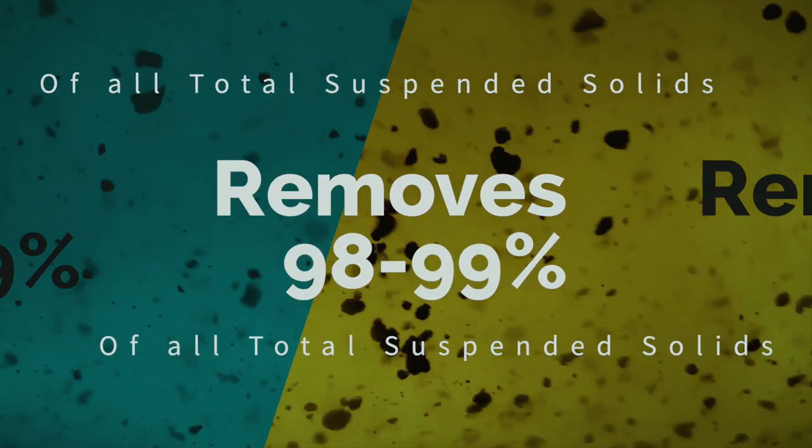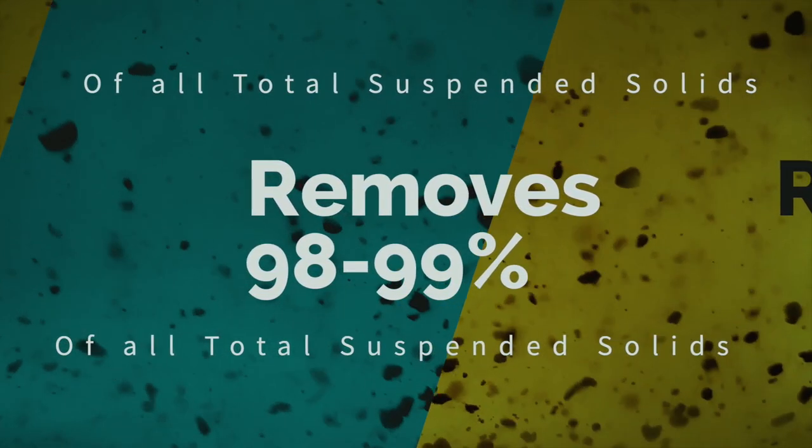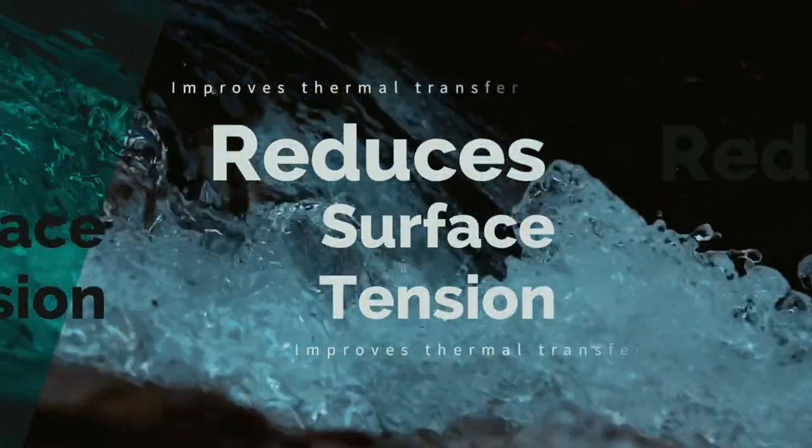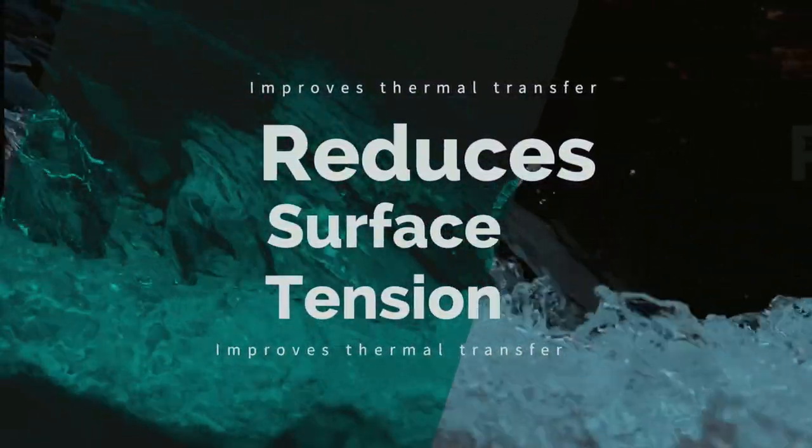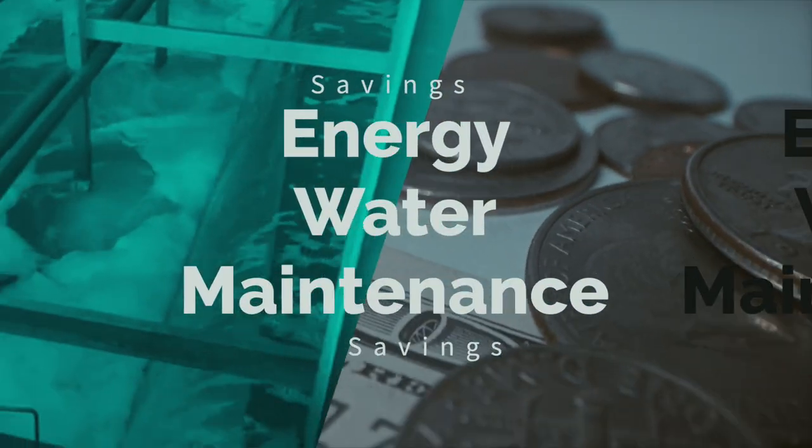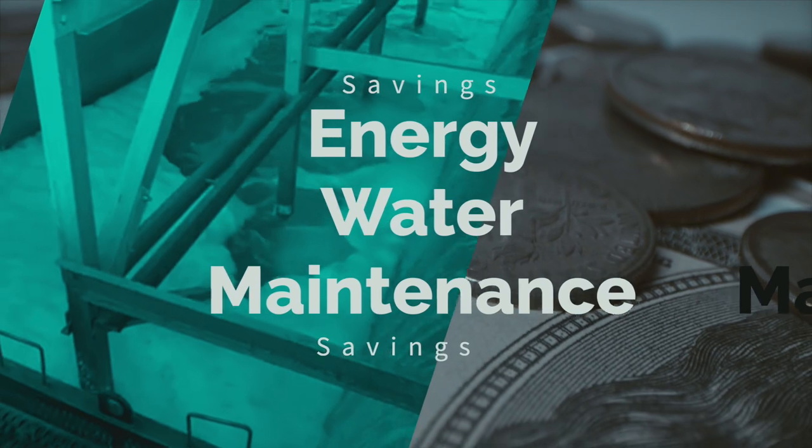Electrocell removes 98 to 99 percent of all total suspended solids down to 1 micron and reduces surface tension, which improves thermal transfer and reduces the risk of bio-growth, all of which results in savings in energy, water, and maintenance.